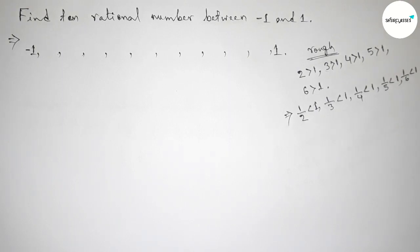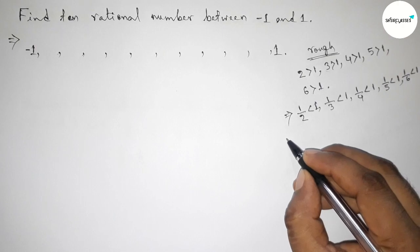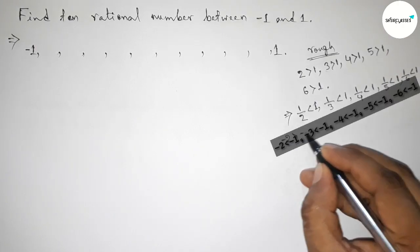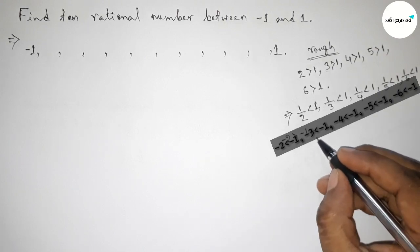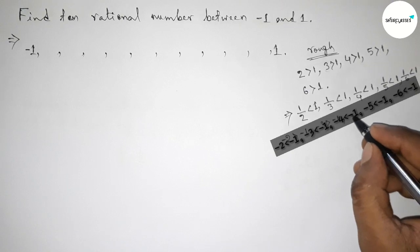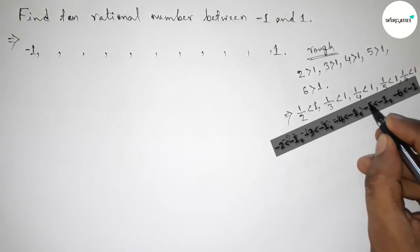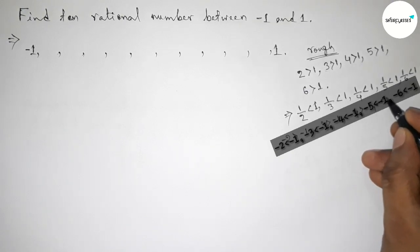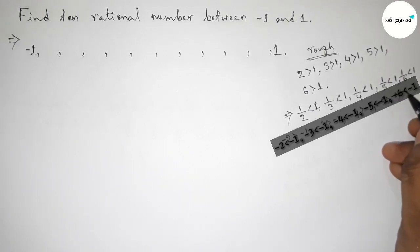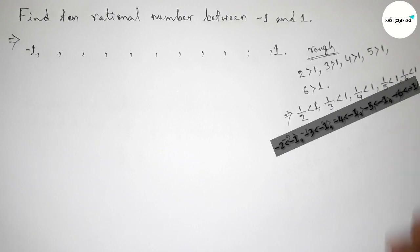Now for the negative cases, taking 5 negative numbers: minus 2, which is always less than minus 1. Then minus 3, which is less than minus 1. Minus 4, less than minus 1. Minus 5, less than minus 1. And minus 6, less than minus 1.